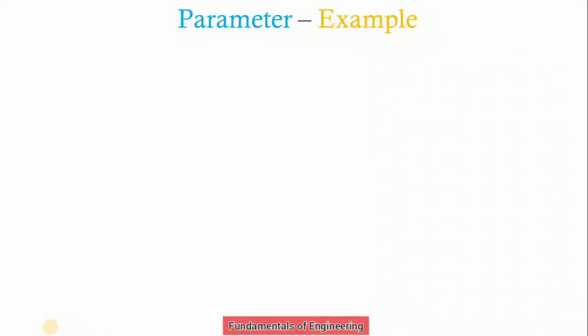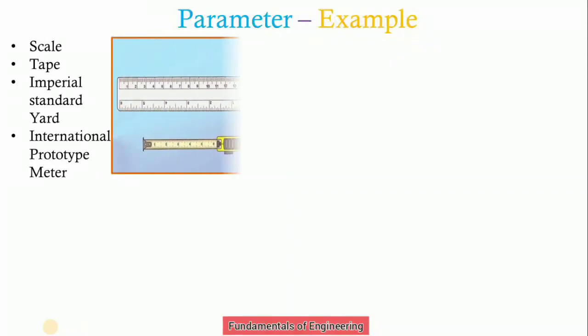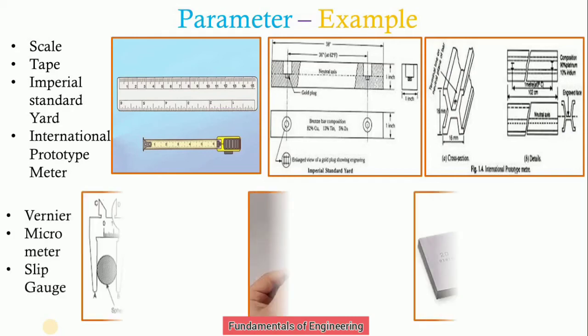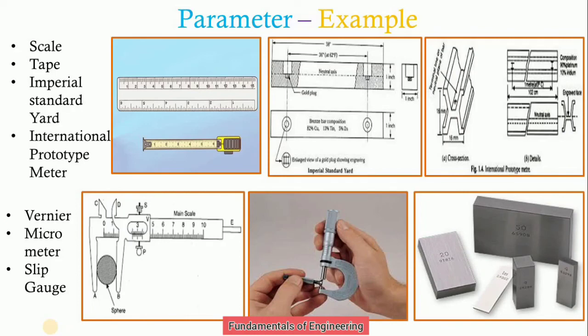Examples of line standards are: scale, tape, imperial standard yard, and international prototype meter. These are the examples coming under line standard. And end standard: vernier, micrometer, and slip gauges.